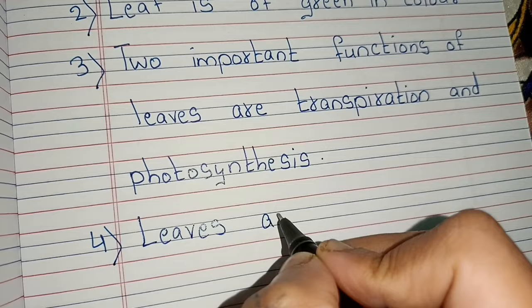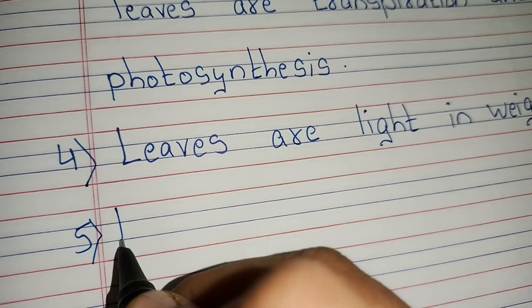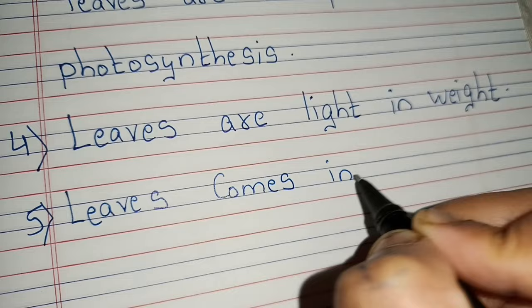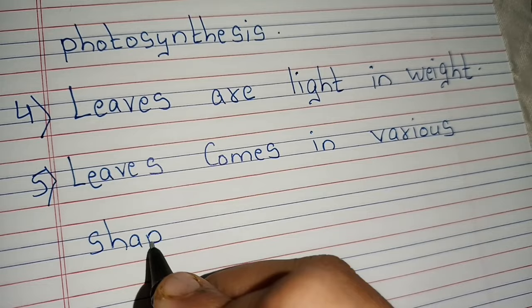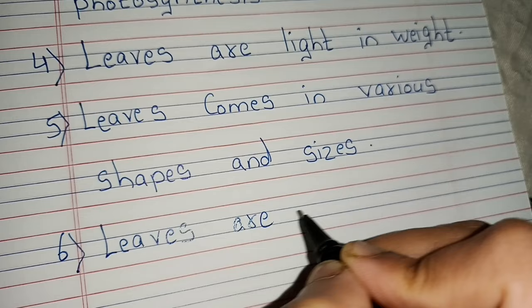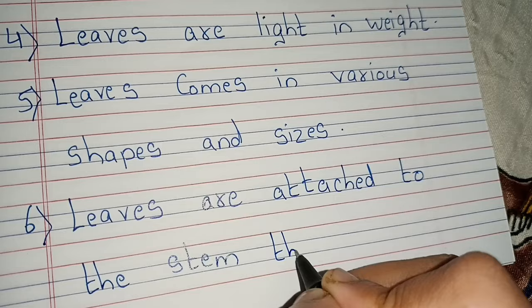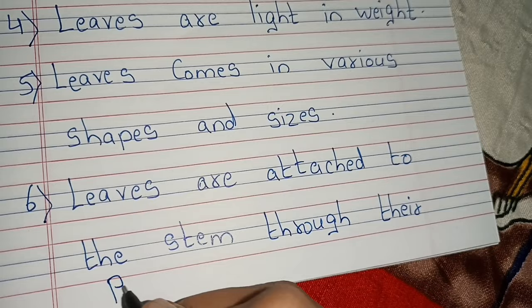Leaves are light in weight. Leaf comes in various shapes and sizes. Leaves are attached to the stem through their petiole.